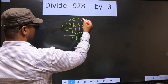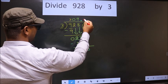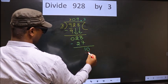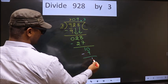So put a dot. Take 0. So 10. A number close to 10 in 3 table is 3 times 3 is 9. Now you subtract. 10 minus 9, 1.